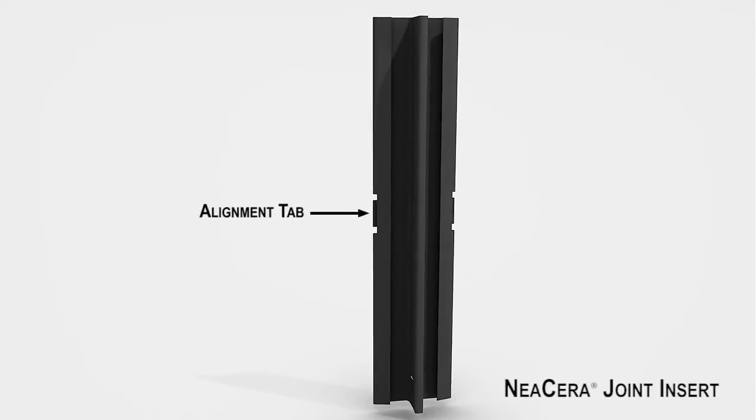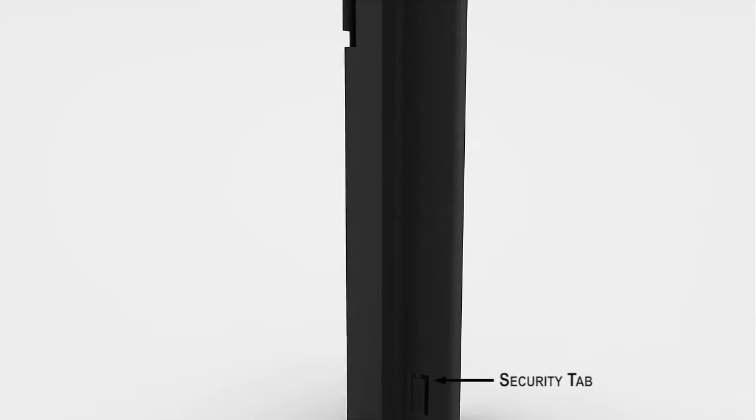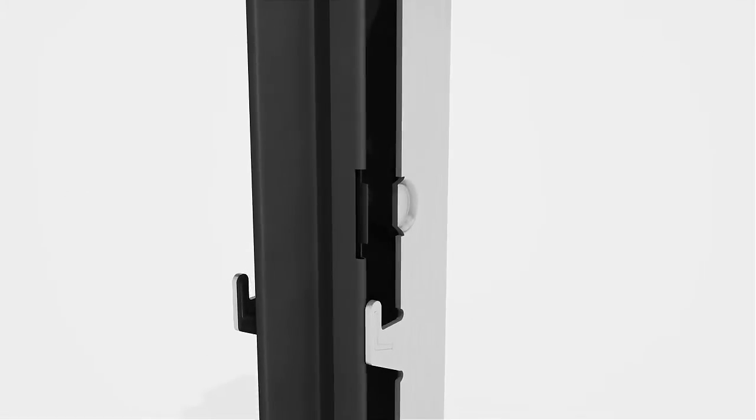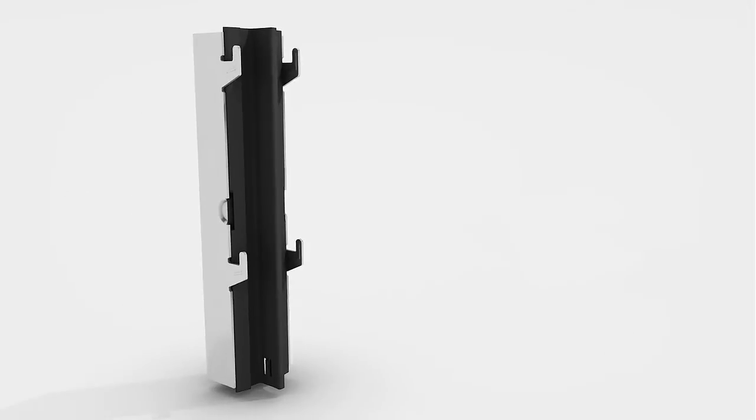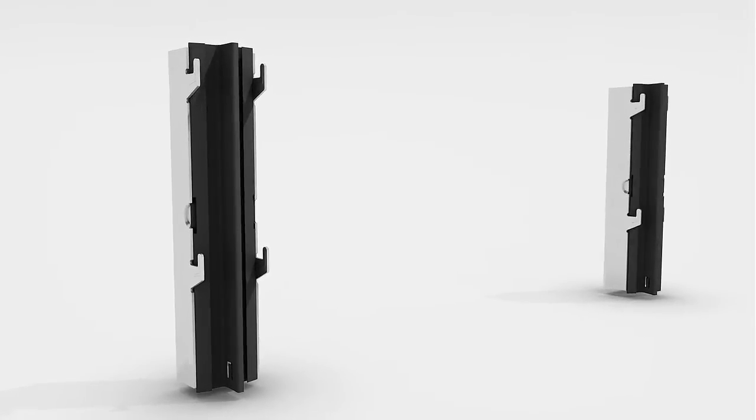The third universal component is the Neocera joint insert. Joint inserts ensure panel alignment, a consistent reveal, and are spring-loaded to prevent the panels from vibrating. The joint insert is friction fit and simply snaps into the indexes in the support profile.